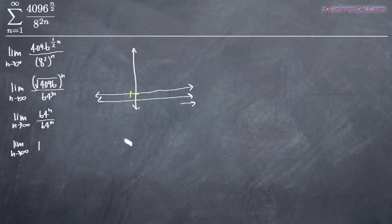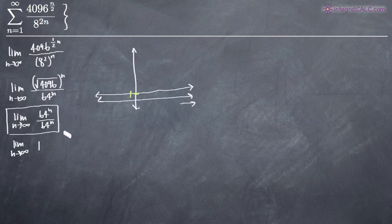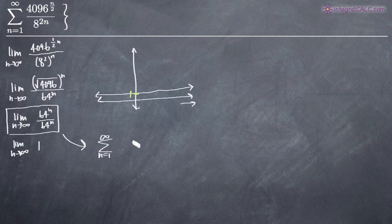Now we want to talk about the sum of the infinite series. To figure out the sum, we can work with the simplified function since we only simplified without changing the value. So the sum of the series from n equals 1 to infinity — if we just start plugging in numbers, starting with n equals 1, we get 64 to the first power over 64 to the first power for our first term.